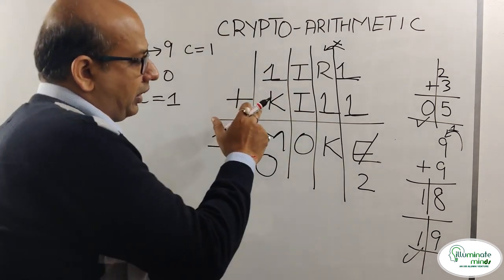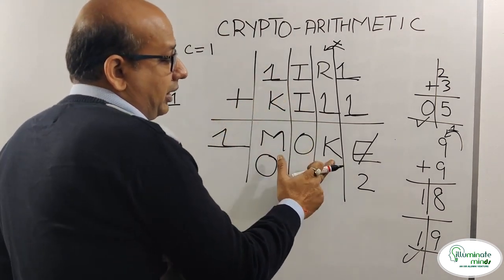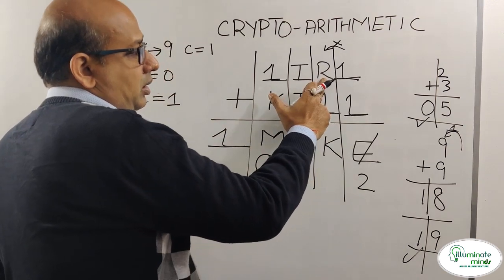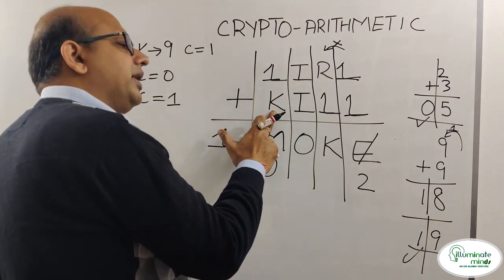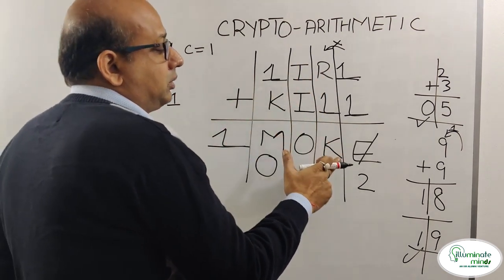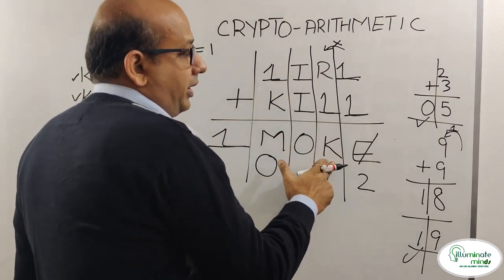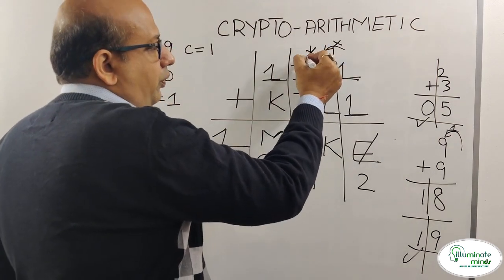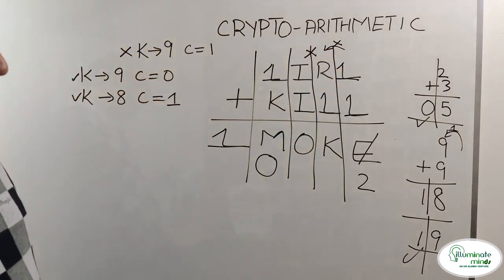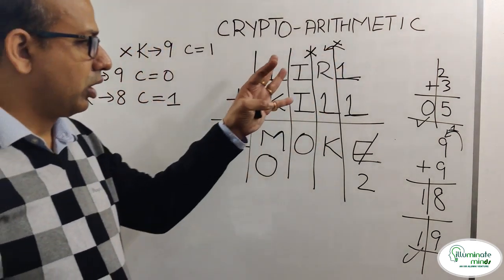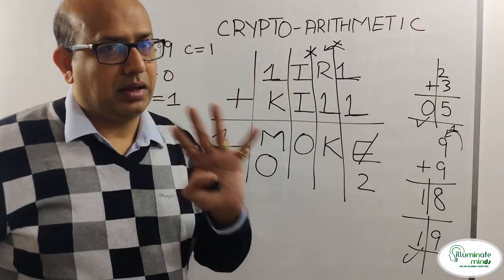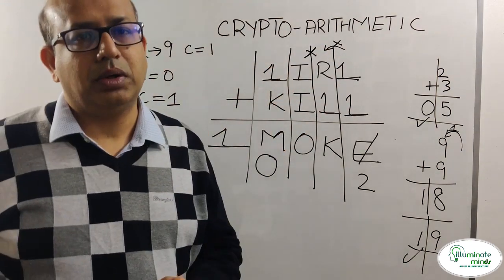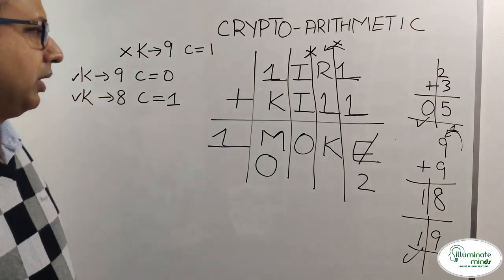If K equals 9, then K is 9 and R is 8. If K equals 8, then K is 8 and R is 7, with no flow of carry-over from that position. So everything depends on I — specifically whether I plus I results in a two-digit number or a single-digit number.